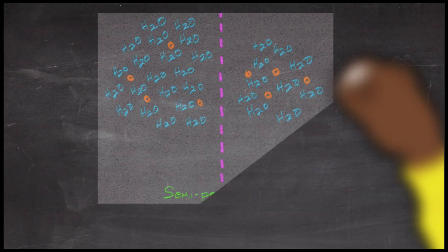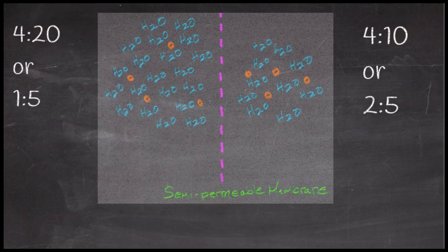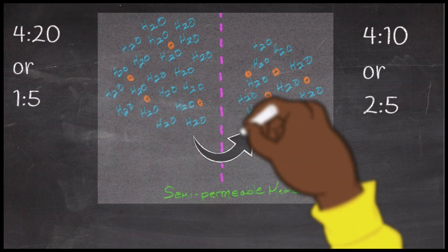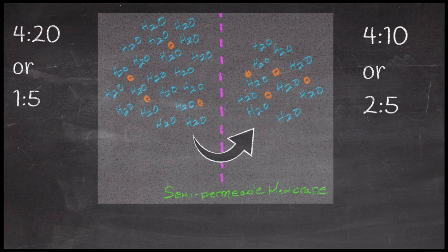If we look at this next one, we have 4 to 20 versus 4 to 10. The arrow is moving to the right because there is a greater concentration of solutes on the right side. Even though there is the same amount of solutes on each side — 4 on the left and 4 on the right — there is a greater concentration of solutes on the right, which means there is a lower concentration of water on the right. So water is going to move from the area of high molecular water concentration to the right where there is a lower molecular water concentration. That is osmosis.